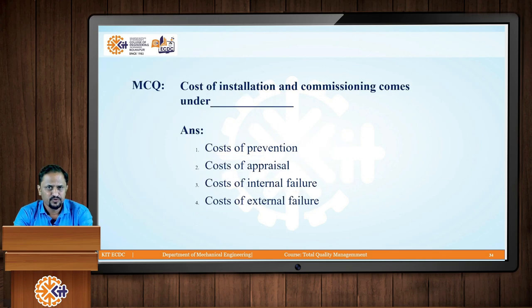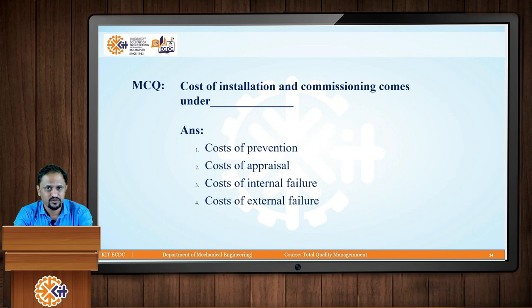Let us pause for a while and try to answer this multiple choice question: cost of installation and commissioning comes under which category? Options are cost of prevention, cost of appraisal, cost of internal failure, and cost of external failure. With this we will stop today's session. In the next session we will discuss contributions from various quality gurus. Thank you.